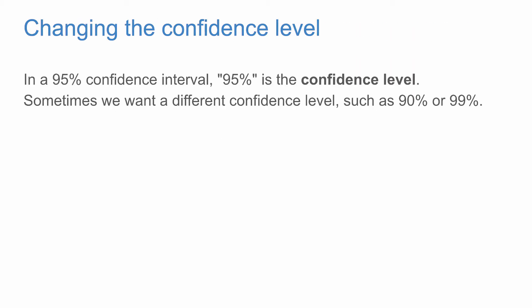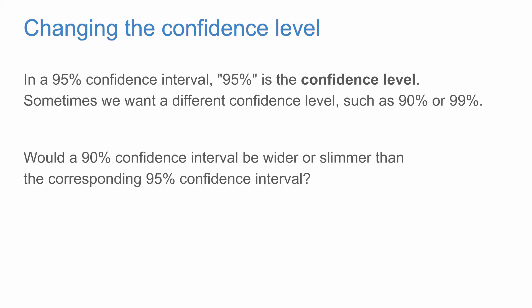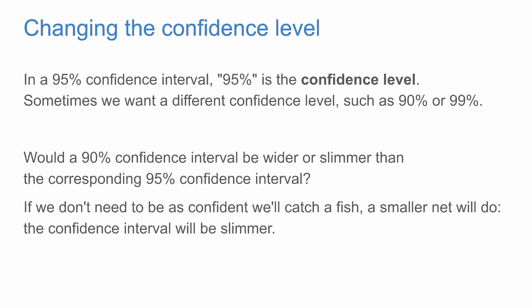In a 95% confidence interval, 95% is the confidence level. Sometimes we want to use a different confidence level, such as 90% or 99%. Do you think a 90% confidence interval would be wider or slimmer than a corresponding 95% confidence interval? Think back to our earlier analogy with trying to catch the fish. If we don't need to be as confident we'll catch a fish, a smaller net will typically do. This means a 90% confidence interval will be slimmer than a 95% confidence interval.